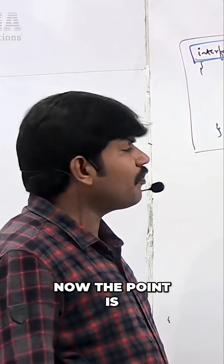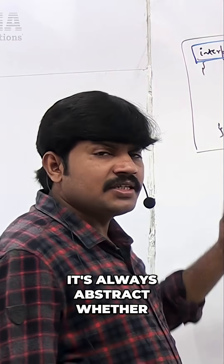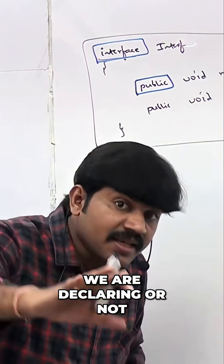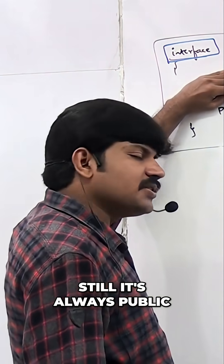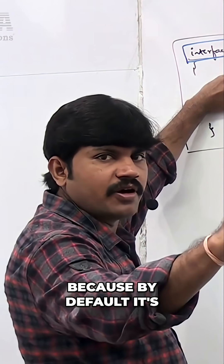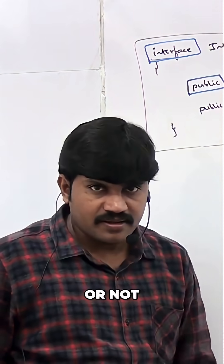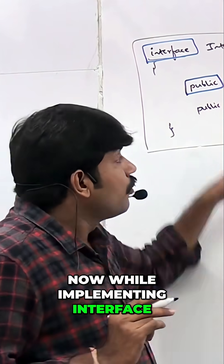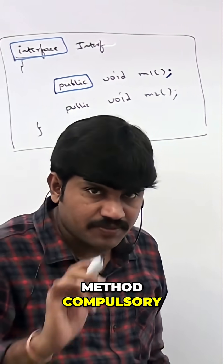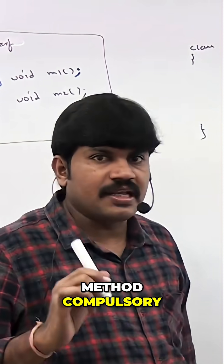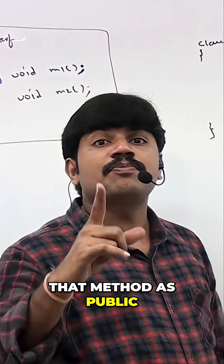It's always public, it's always abstract, whether we are declaring it or not. Even if I'm not writing 'public', it's still always public because by default it's always public and abstract. Now, while implementing an interface method, we compulsorily have to declare that method as public.